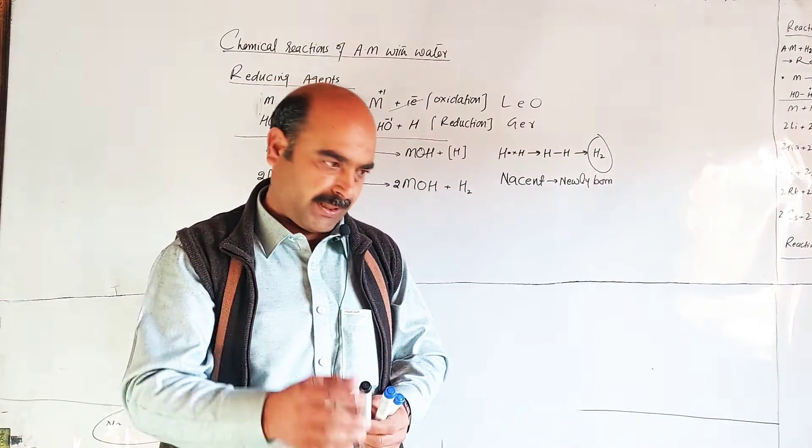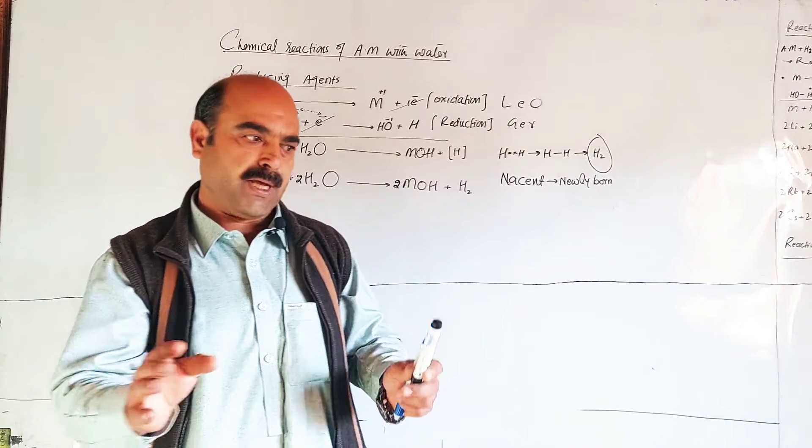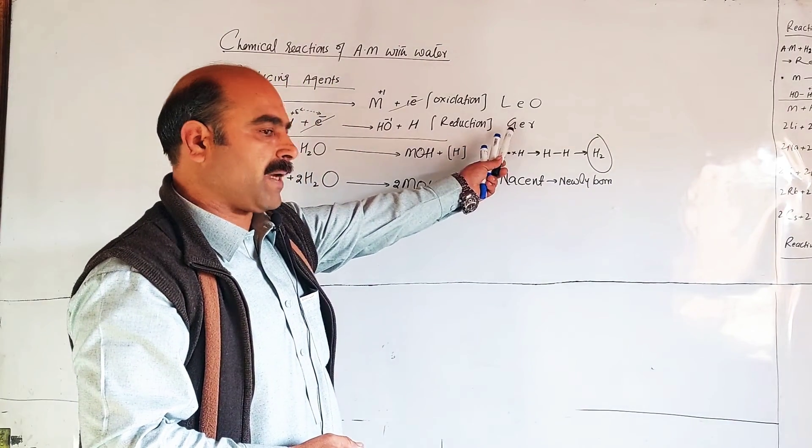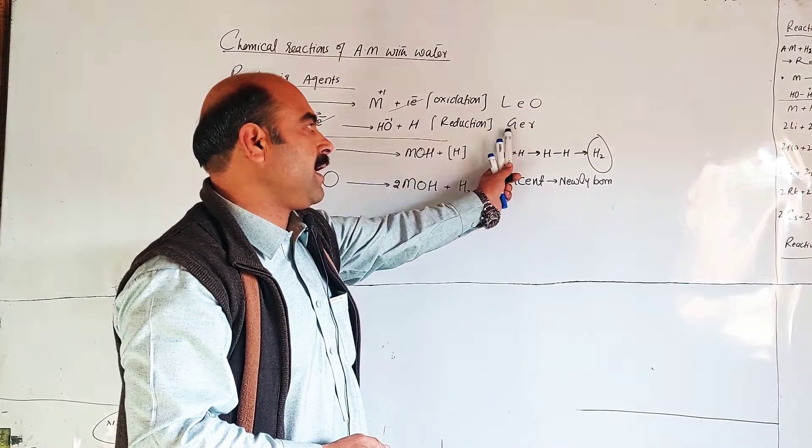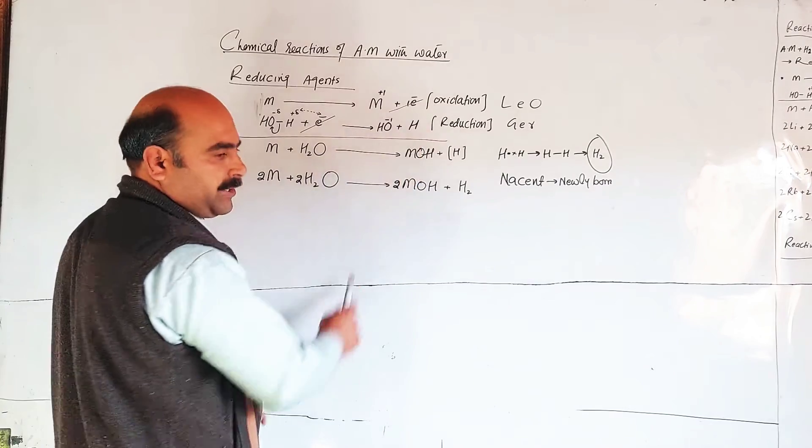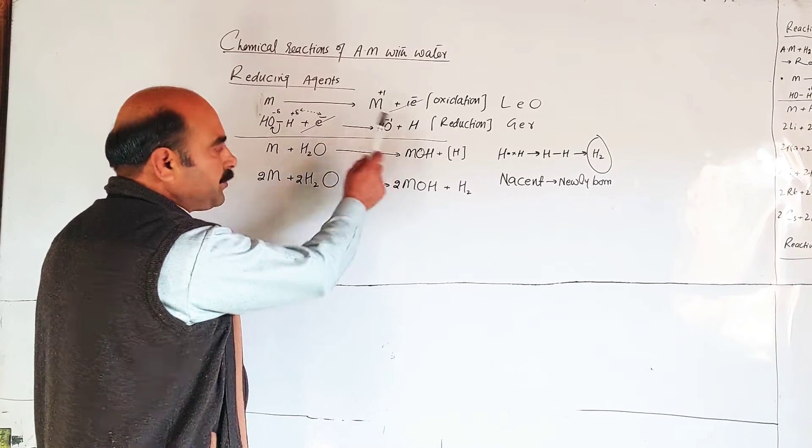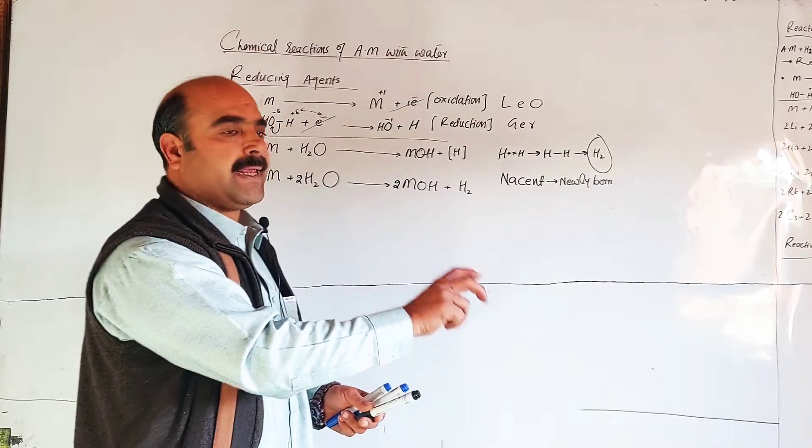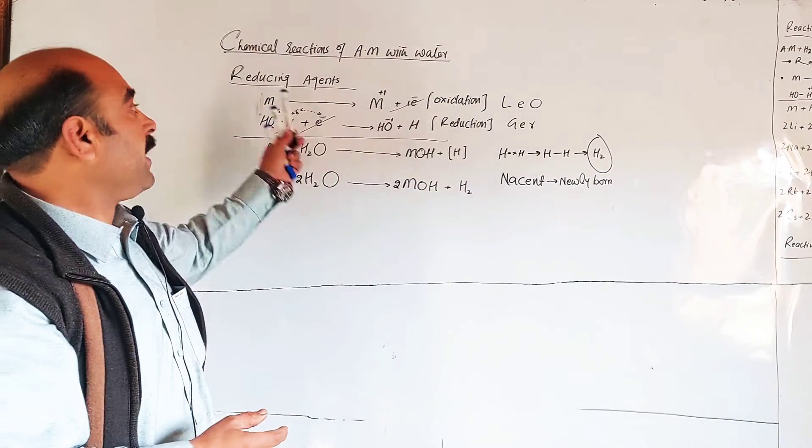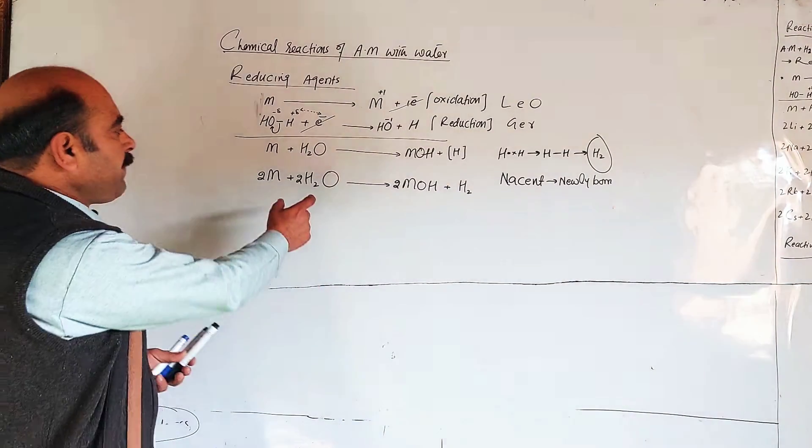Loss of electron is oxidation, gain of electron is reduction. The metals lose electrons, so oxidation occurs. Water gains electrons, so reduction occurs and hydrogen is reduced. The metal provides electrons, so these are reducing agents.